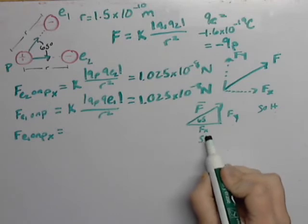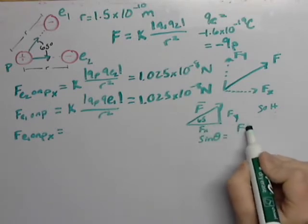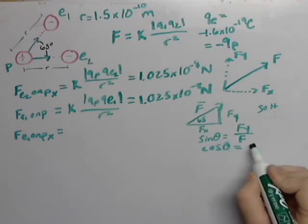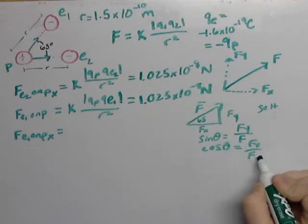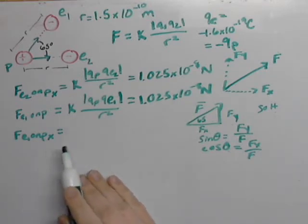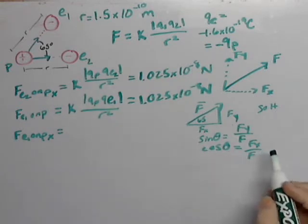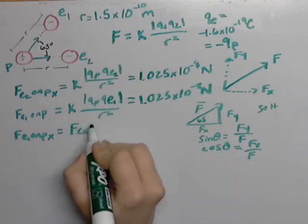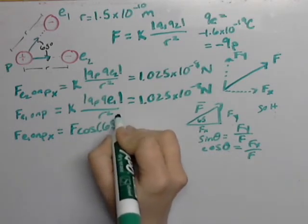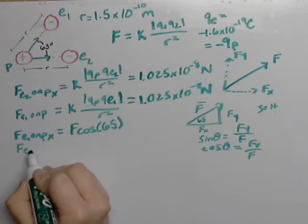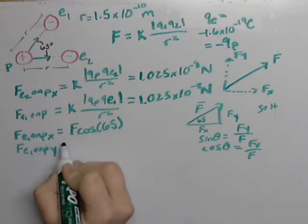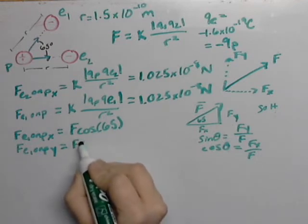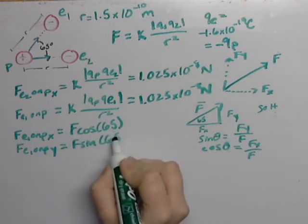So the sine of the angle is equal to the opposite, which is fy, over the hypotenuse, which is f. And the cosine of the angle is equal to fx over f. So since we're finding the x component, we're going to put cosine of the angle in. If we're trying to find f of x, you multiply both sides by f. So this should equal f cosine of the angle, which we have as 65. Then f e1 on y, multiply both sides by f. It's going to be f sine of the angle, which is 65.